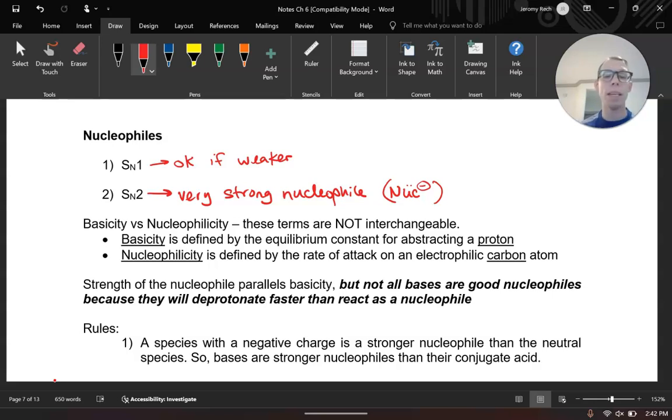So nucleophiles and bases don't necessarily trend in the same direction. They can parallel, but it's not a one-to-one. In many ways, as I have here in bold, not all bases are good nucleophiles. If something has a really high amount of basicity, it might be more often that it actually abstracts a proton rather than attacking your carbon. So there's kind of this balance between basicity and nucleophilicity. So what we're going to do is walk through a series of four general themes to describe the strength of nucleophiles. And we'll give some examples for each of those.